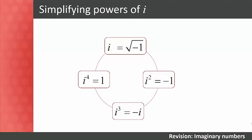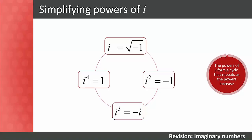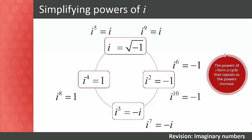A diagram can be a useful tool to help students working with powers of i, showing how they form a repeating cycle: i^5 = i, i^6 = −1, i^7 = −i, i^8 = 1, i^9 = i, i^10 = −1, i^11 = −i, i^12 = 1, and so on.